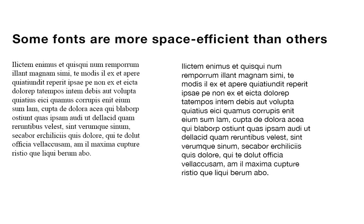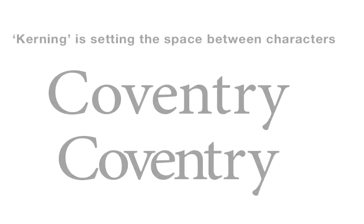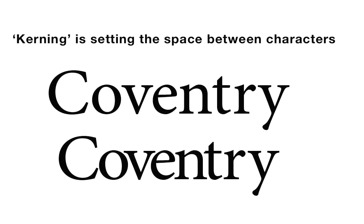Different fonts take up a different amount of space. On the left we have Times New Roman, on the right Helvetica Neue, both in the same size — but the Helvetica takes up more space than the Times Roman, so that's something to factor in when designing a layout. We also have control over the spacing between characters. Around the O, V, and E in the word 'Coventry' there's quite a lot of space, while around the TR and Y there's very little. The version below has those spaces tightened up to be consistent all the way along the word. That process is called kerning.